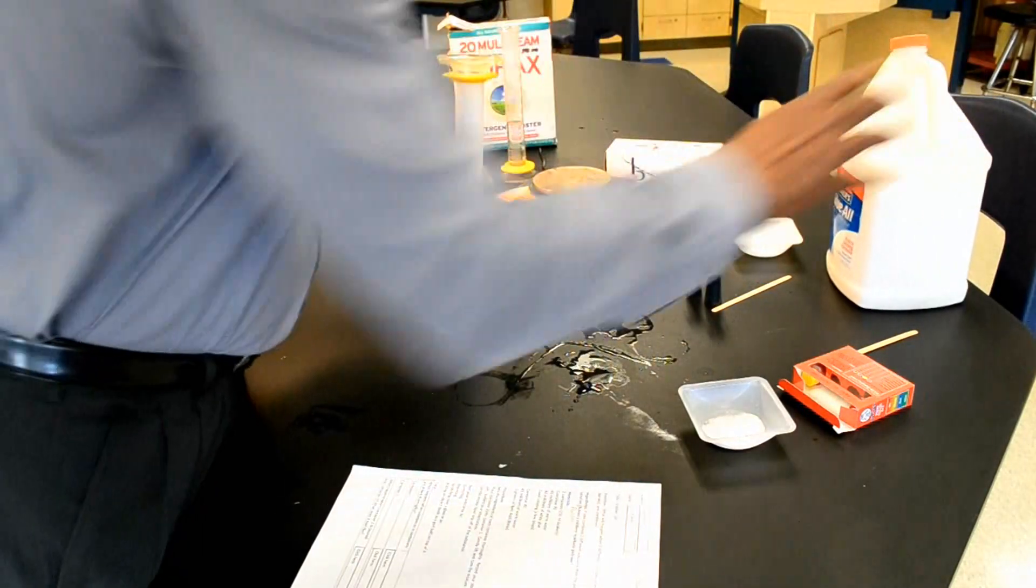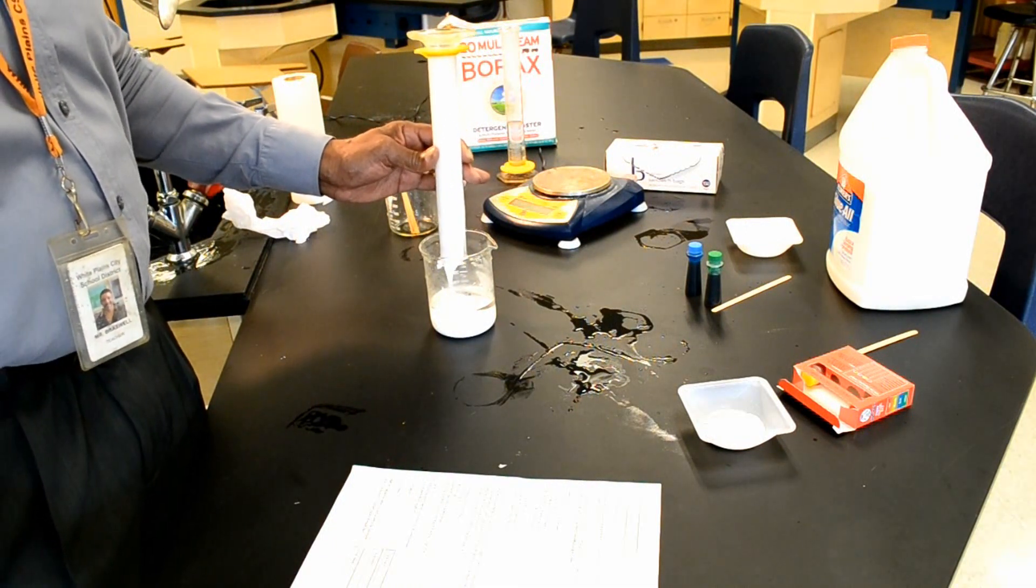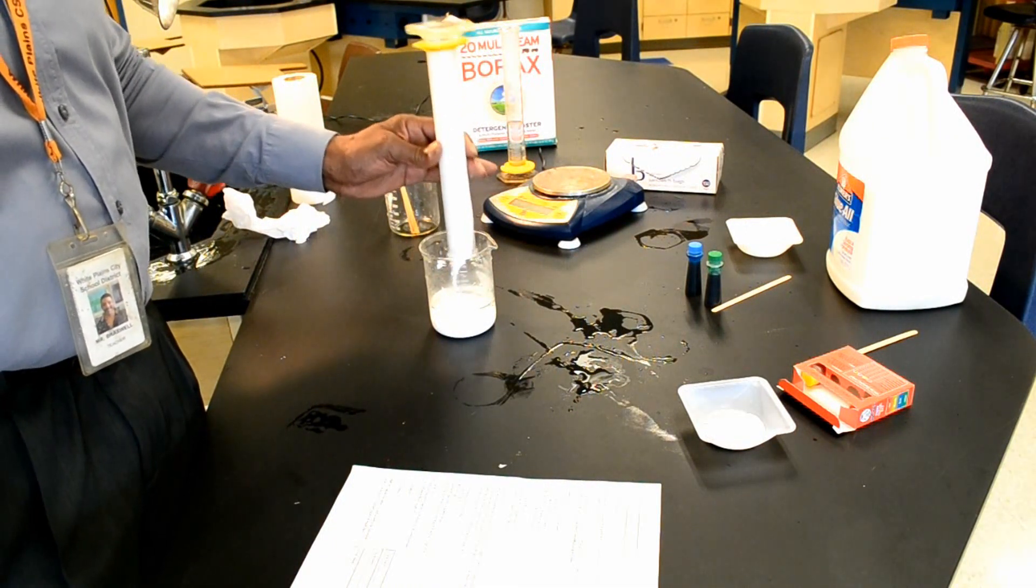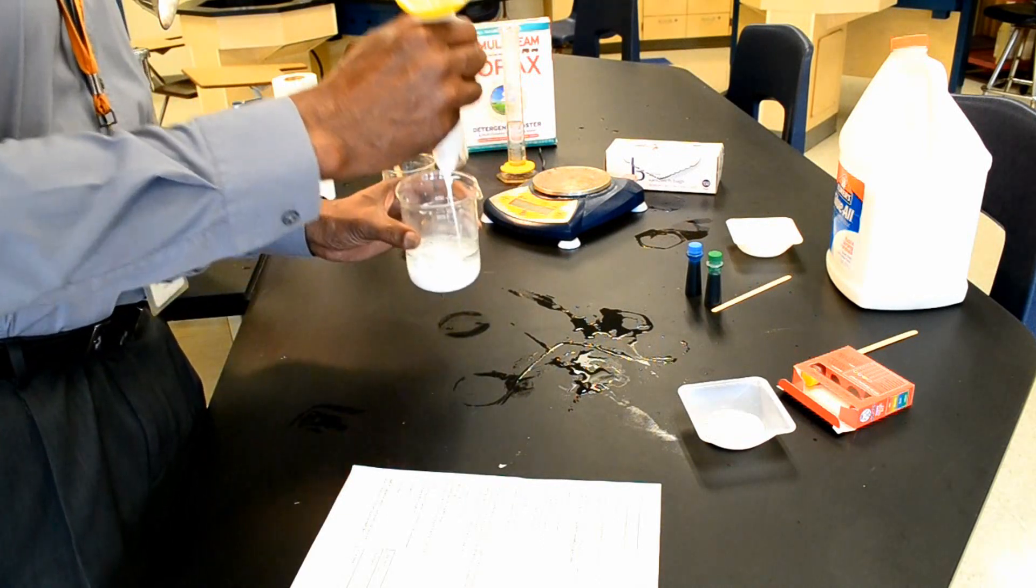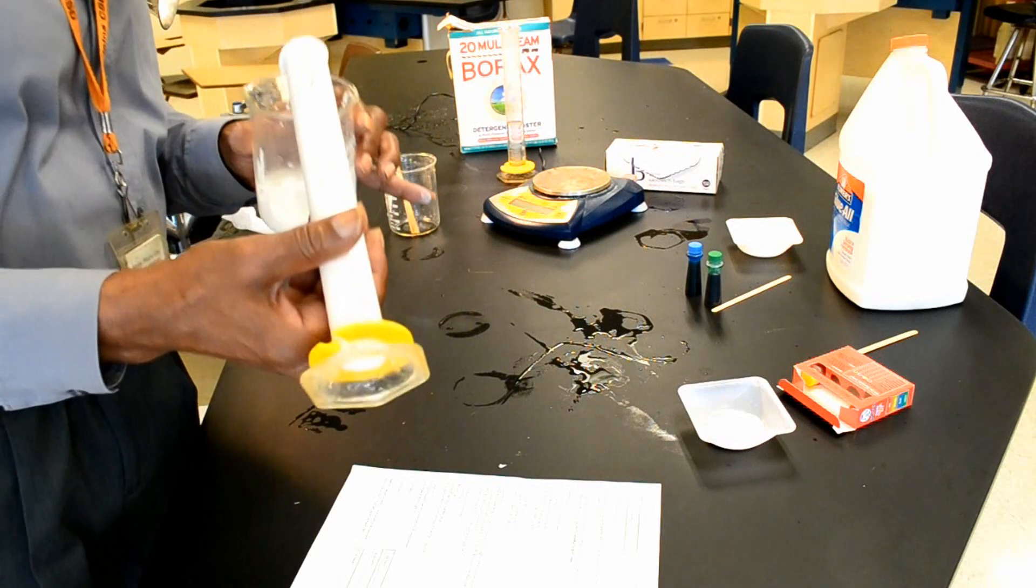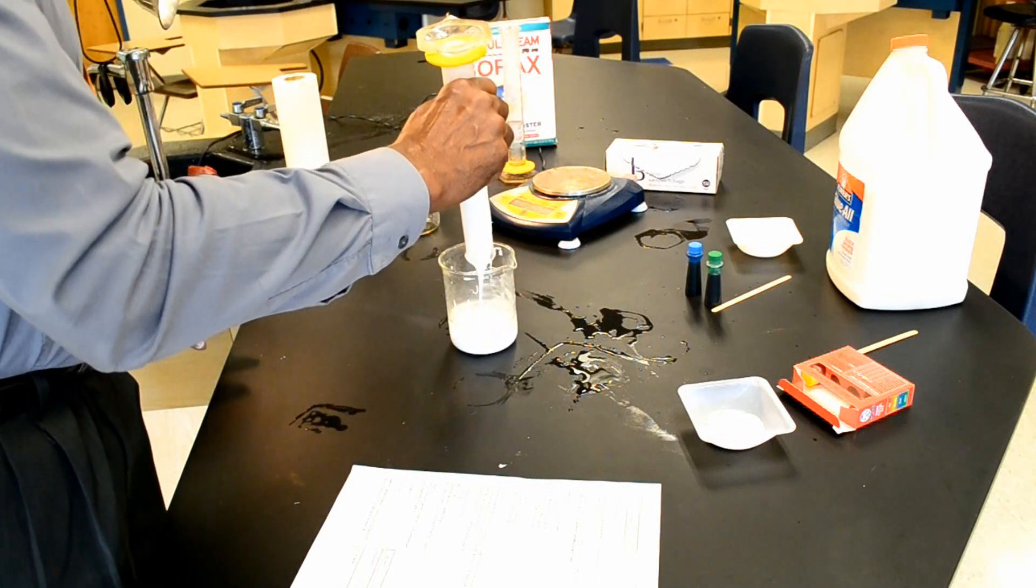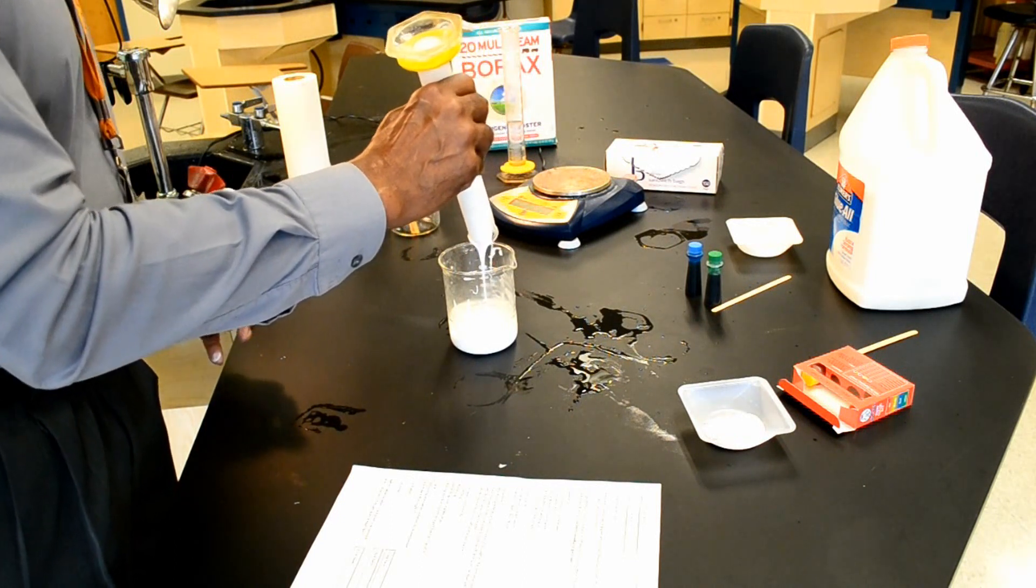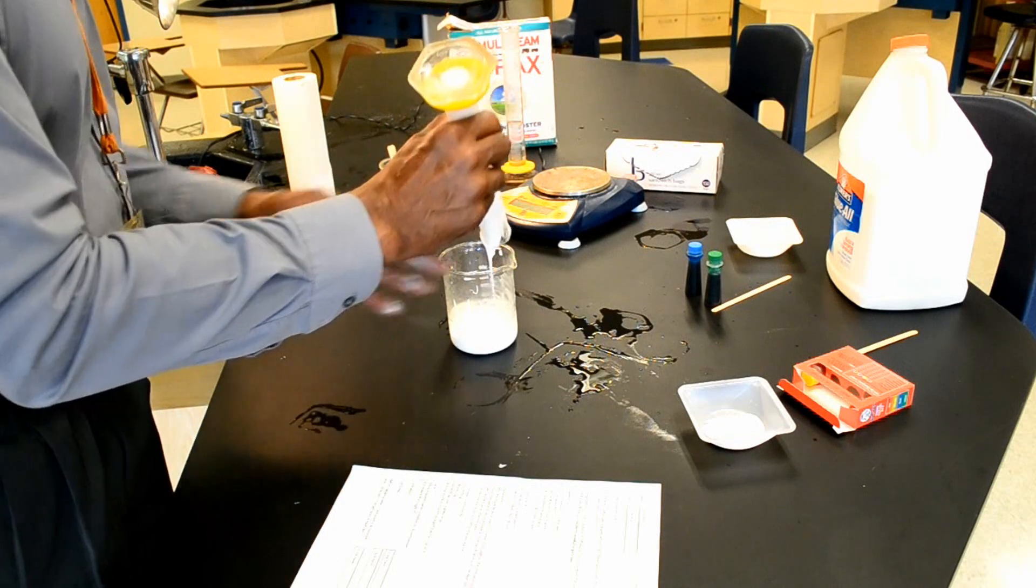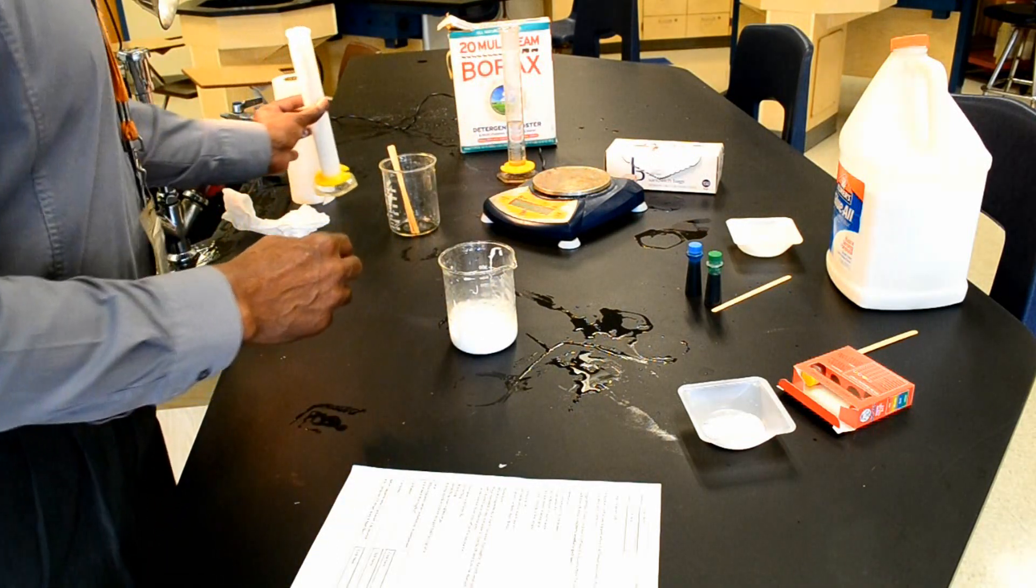Remember, when measuring liquids in chemistry, always use a graduated cylinder. I think that's just about all the glue that we're going to get out of the graduated cylinder. You can see it's still flowing a little bit, but we're going to forego that because I want this lab to be short and fun.